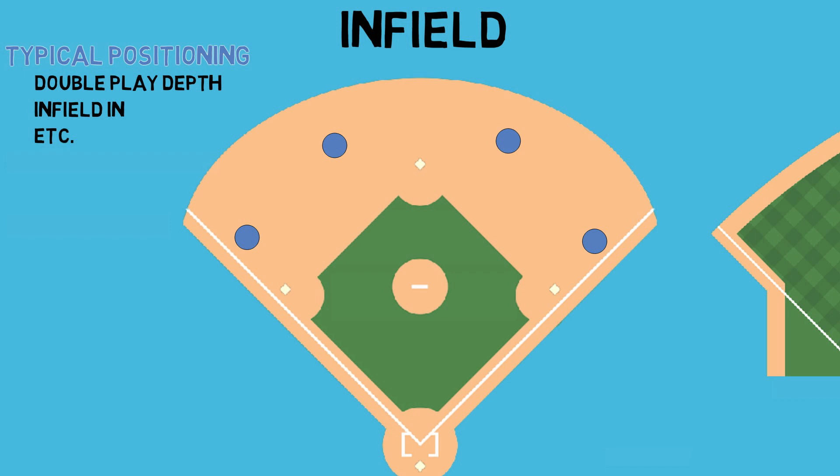These examples of typical positioning may seem obvious, but they give you an idea of where the extreme shifts came from. Every single pitch, every single athlete on the field is moving one way or another, attempting to position themselves where they believe they have the best chance to make a play. That's what shifts are all about — we just have more data backing up those positioning ideas than we did 10 years ago.